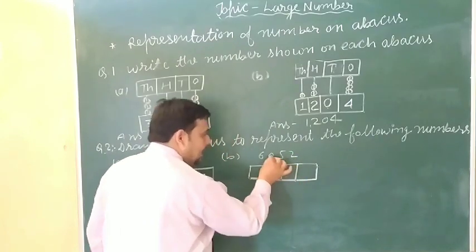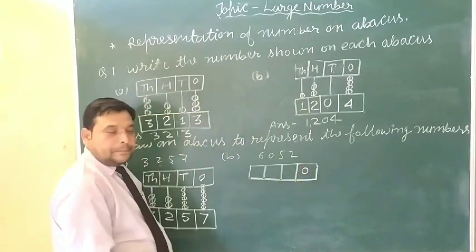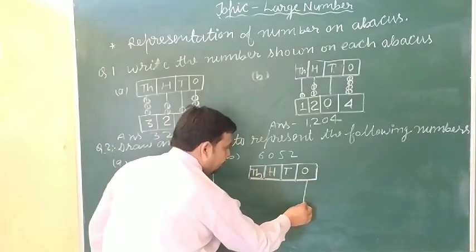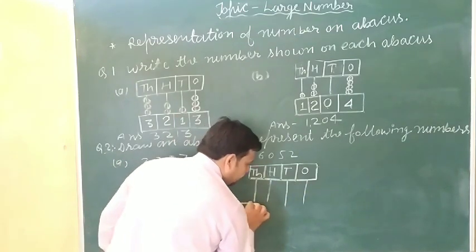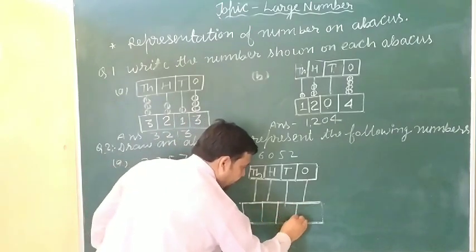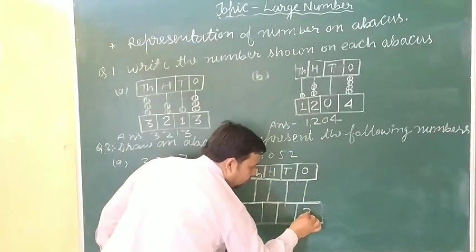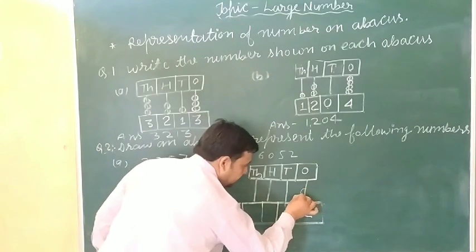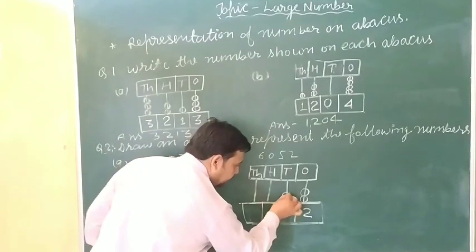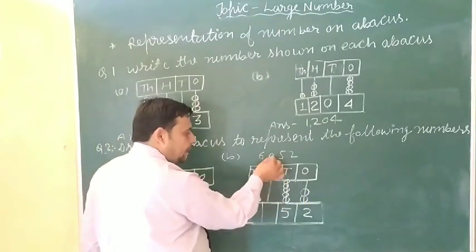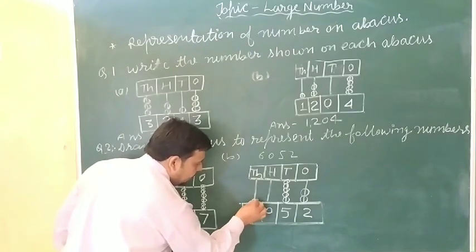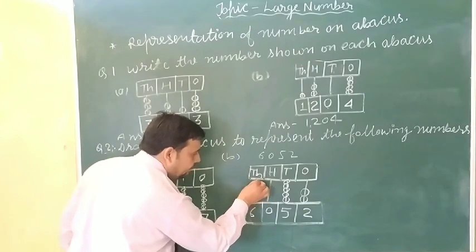Next question: one, ten, hundred, and thousand. Ones place par two balls. Tens place par kitna hai? Five — yahan par five balls: three, four, five. Hundreds place par zero — koi balls nahi. One, two, three, four, five, six.